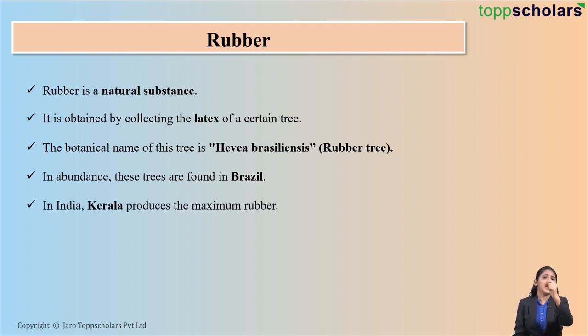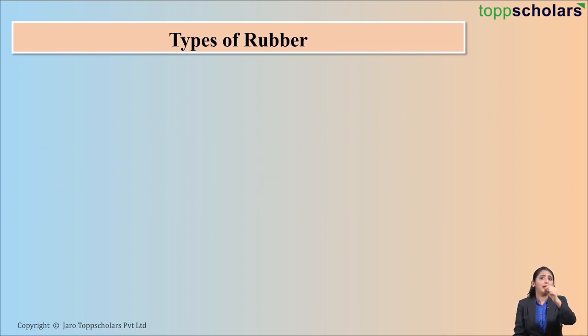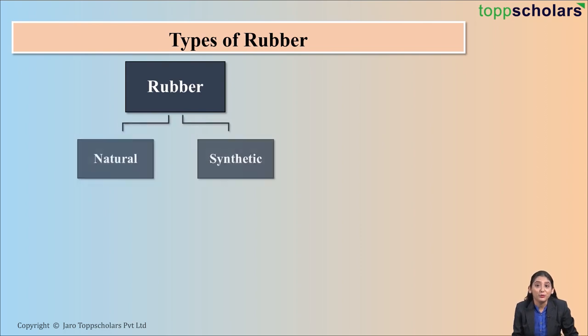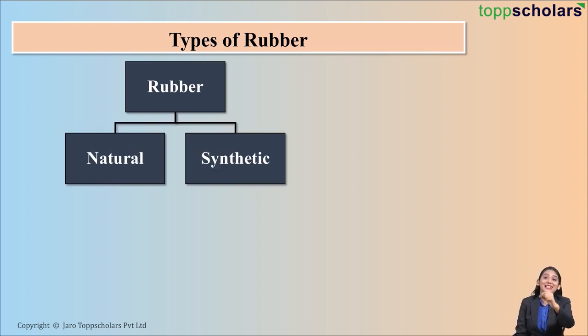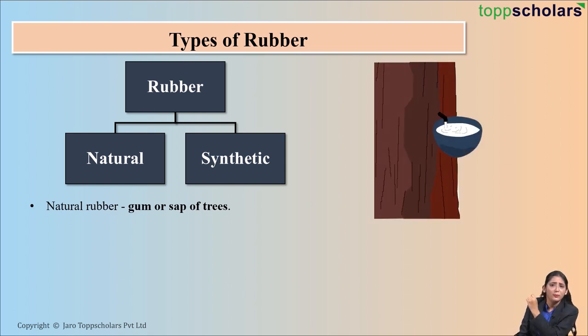As we know, there are different varieties of rubber, but rubber can be broadly classified into natural rubber and synthetic rubber. Natural rubber is obtained from gum or sap of trees. When you cut the bark of a tree, you observe a white liquid which oozes out. This white liquid is called latex, from which you obtain natural rubber. This natural rubber is white in color and has a peculiar odor.